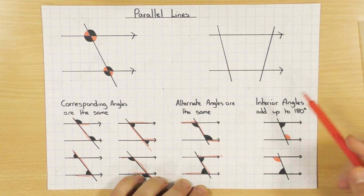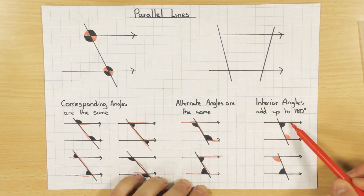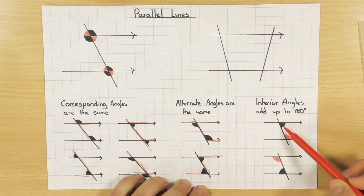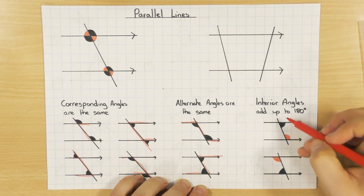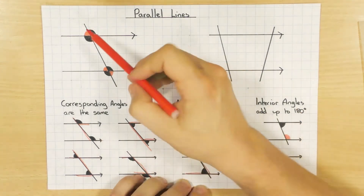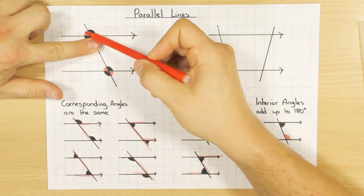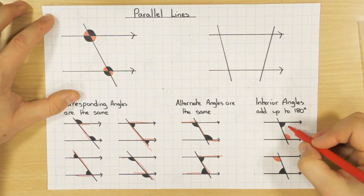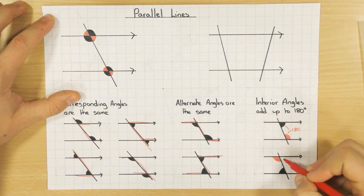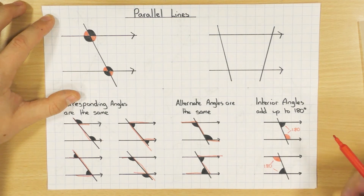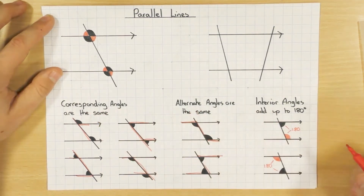The last rule is interior angles. Interior angles are on the inside of the parallel lines and on the same side of the transversal. They are not equal — one is obtuse and one is acute — but when you add them together they equal 180 degrees. Those are the three rules we'll use in the examples that follow.